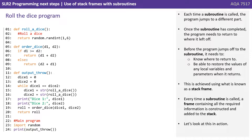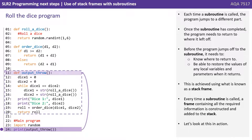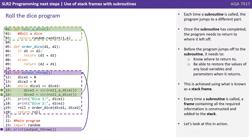Each time a subroutine is called, the program jumps to a different part. Once the subroutine is completed, the program needs to return where it left off. Before the program jumps off to the subroutine, it needs to know where to return to and be able to restore the values of any local variables and parameters when it returns. This is achieved using what is known as a stack frame.